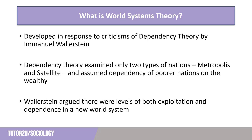Whilst dependency theory saw two distinct groups — the metropolis and the satellite — and examined the relationship between these two, world systems theory argues that the modern economic system is based upon interdependence between three categories of nations: the core, the periphery, and the semi-periphery. It differs from dependency theory by suggesting that the semi-periphery also exploits the peripheral nations.